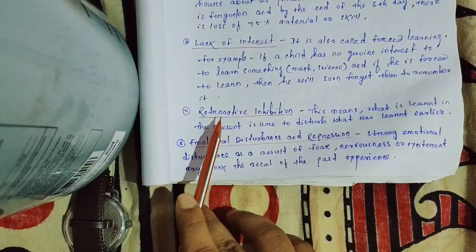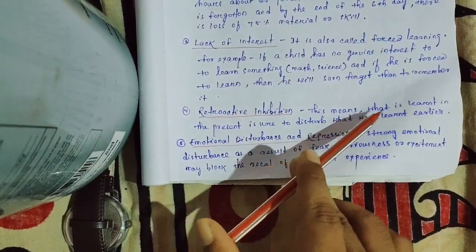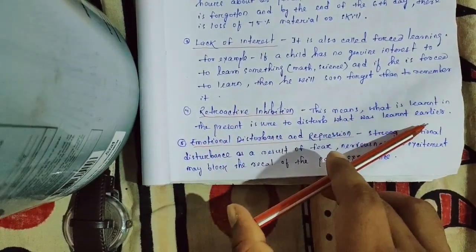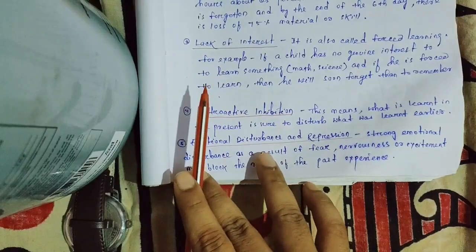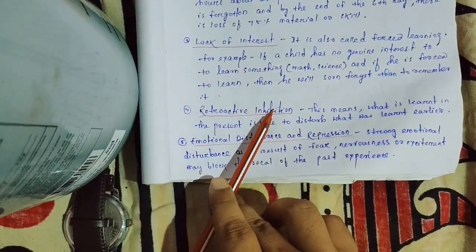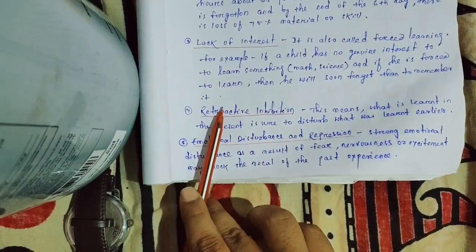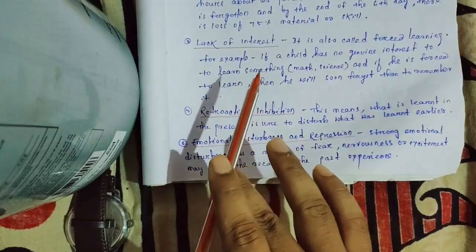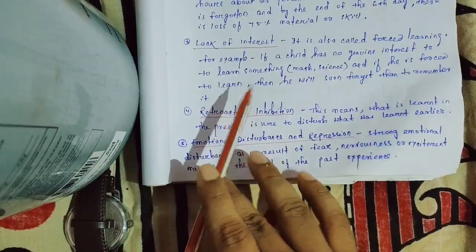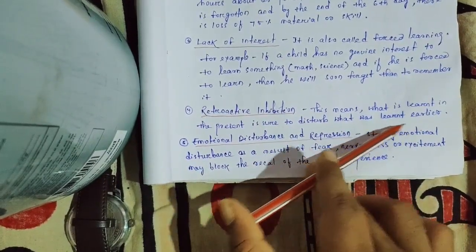Retroactive inhibition means what is learned in the present tends to destroy what was learned earlier. Earlier learning gets interfered with by new learning, causing the older material to be forgotten.